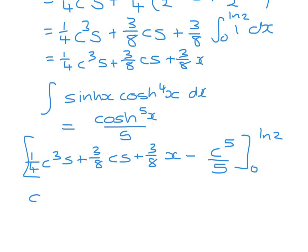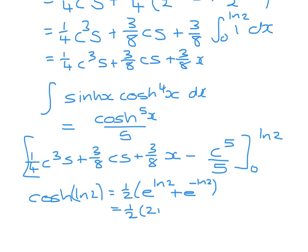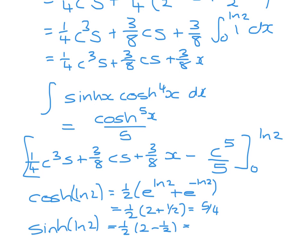We now evaluate from 0 to ln 2. We need cosh of ln 2: it is one half times e to the ln 2, which is 2, plus e to the minus ln 2, which is one half, giving 5 over 4. For sinh of ln 2, the difference gives us one half times 2 minus one half, which is 3 over 4.